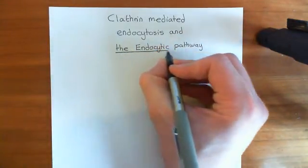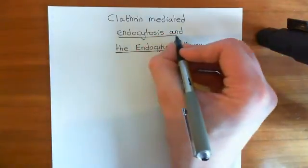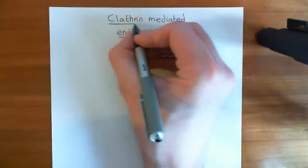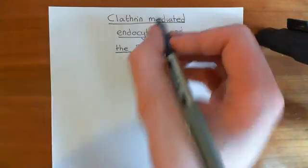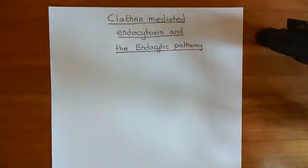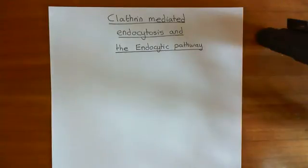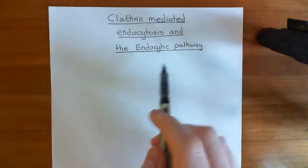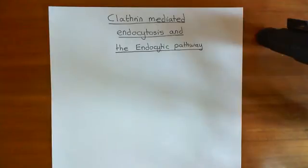Let me define the difference between clathrin-mediated endocytosis and the endocytic pathway. Clathrin-mediated endocytosis is the process by which we endocytose membrane from the cell membrane — basically how we can pinch off a vesicle's worth of membrane to make an endocytic vesicle. The endocytic pathway is then the pathway which the endocytic vesicle goes down, i.e. what happens to it next.